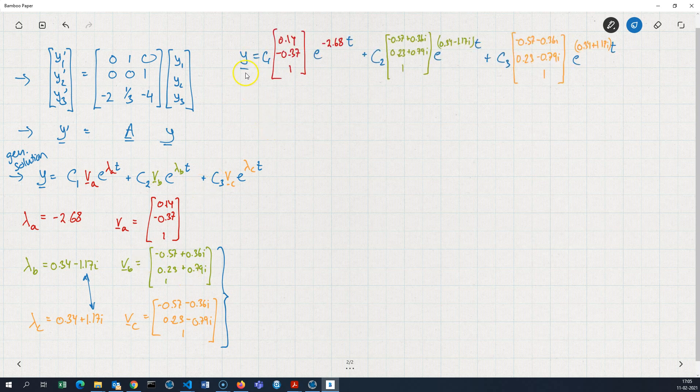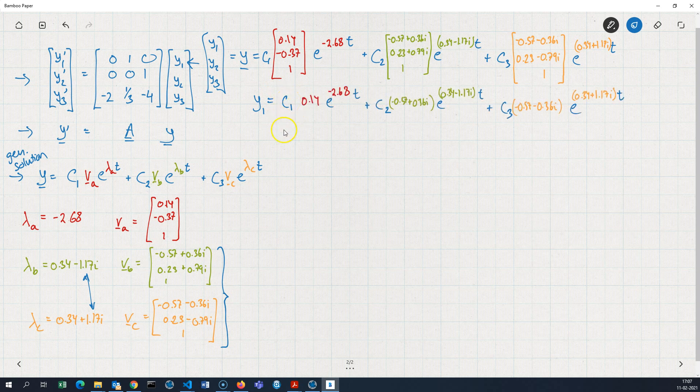This means that our solution will be complex. But let's just write it. Alright. So, here we are. That's the general solution to this problem. And again, we're mostly interested in y1. And this vector here is y1, y2, y3. So, if I wanted to extract y1, it would look something like this. And again, notice that this is, in fact, a complex solution. Typically, we would want the real part of the solution. We can ask the computer to find the real part for us.